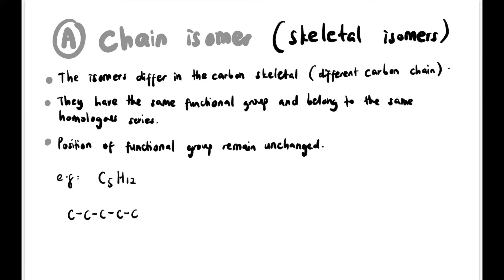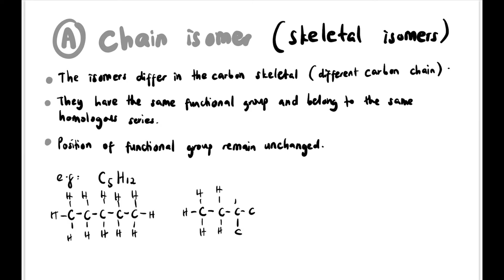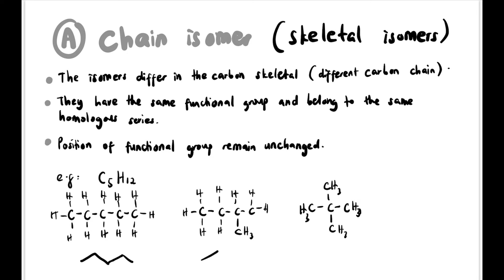For example, C5H12: we can draw 5 carbons in a straight chain with 12 hydrogens. For the second chain isomer, we reduce the main chain to 4 carbons and make the 5th carbon a branch. For the third, we reduce the chain to 3 carbons with 2 branches above and below the middle carbon. In skeletal form: one has 5 in a straight line, one has 4 with 1 branch, and one has 3 with 2 branches. All have 5 carbons total including the branches, and all are alkanes — no functional group difference.